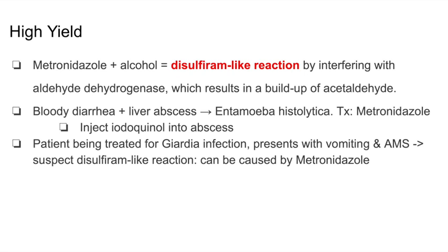Let's give another scenario. If a patient has bloody diarrhea and a liver abscess, more than likely this patient has Entamoeba histolytica, and this is also treated with metronidazole. So if a patient is being treated for Giardia, Entamoeba, or any other indication for metronidazole, and they drink alcohol with it, they can develop a disulfiram-like reaction — extremely high yield. If a patient on Giardia treatment develops vomiting and altered mental status, you would suspect a disulfiram-like reaction.